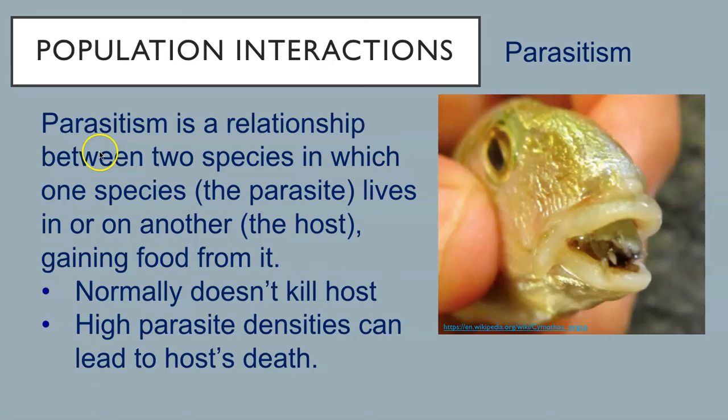Parasitism is a relationship between two species in which one species, the parasite, lives in or on another, the host, gaining food from it. Normally it doesn't kill the host like in predation, but high parasite population densities can lead to a host's death. This parasite enters fish through the gills; the female attaches to the tongue and the male attaches to the gill. The parasite severs the blood vessels in the fish's tongue, causing the tongue to fall off, and then attaches itself to the remaining stub, becoming the fish's new tongue. Surprisingly, it doesn't cause much other damage, though fish with more than one parasite may be underweight.